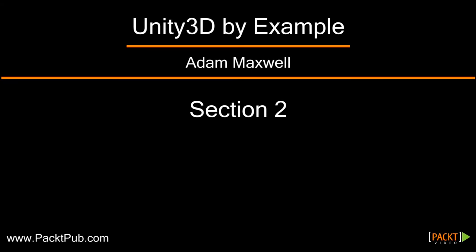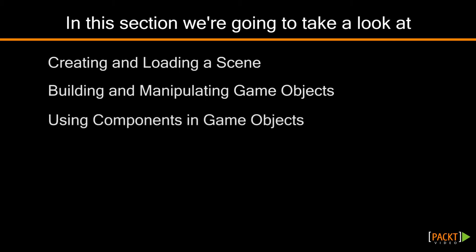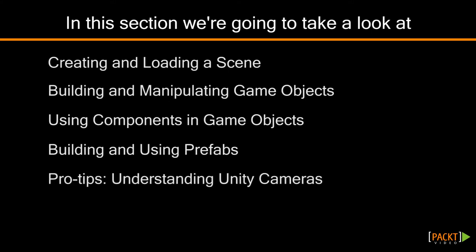Welcome to Section 2 of Unity 3D by Example, Building Scenes. In this section of the course, we're going to take a look at creating and loading a scene, the basic level of a game in Unity, building and manipulating game objects, the basic building blocks of a Unity scene, and then we'll talk about using components in game objects, which are the elements that you actually build game objects out of. We'll also talk about building and using prefabs, which are pre-built objects that you make ahead of time. And finally, in the Pro Tips section, we'll talk about understanding Unity cameras and how you can use them for your game. Here we go!